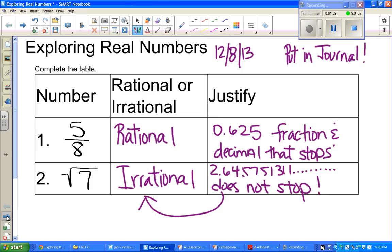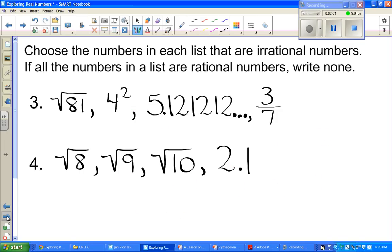Now let's carry on to the next page. Choose the numbers in each list that are irrational numbers. If all the numbers in a list are rational numbers, write none. So irrational, we're looking at the ones that do not come out even. They do not repeat. If you ever see pi, you know that pi is irrational. So let's start with number three.